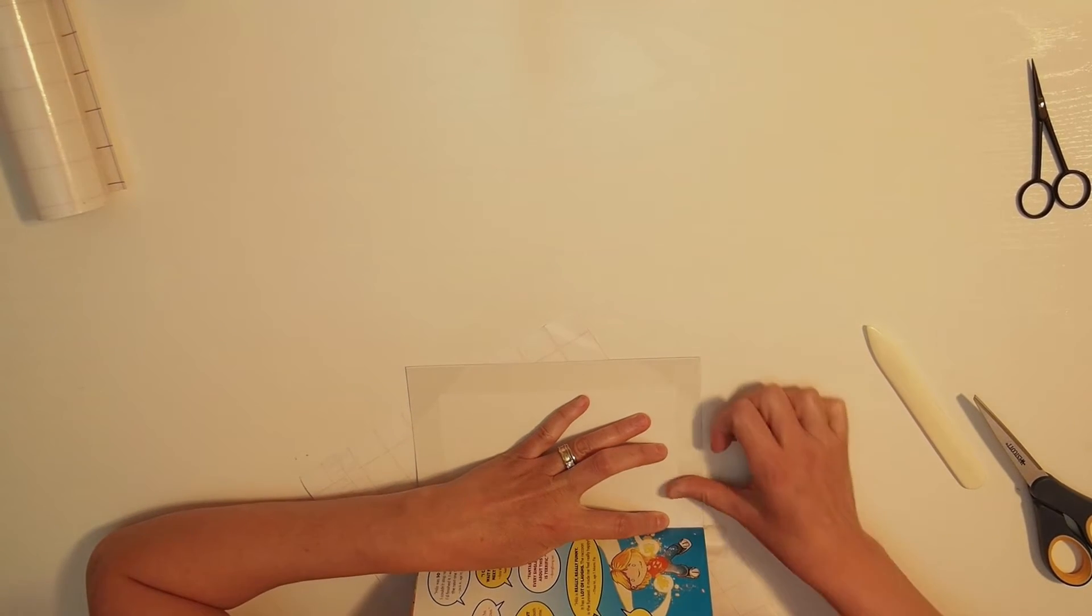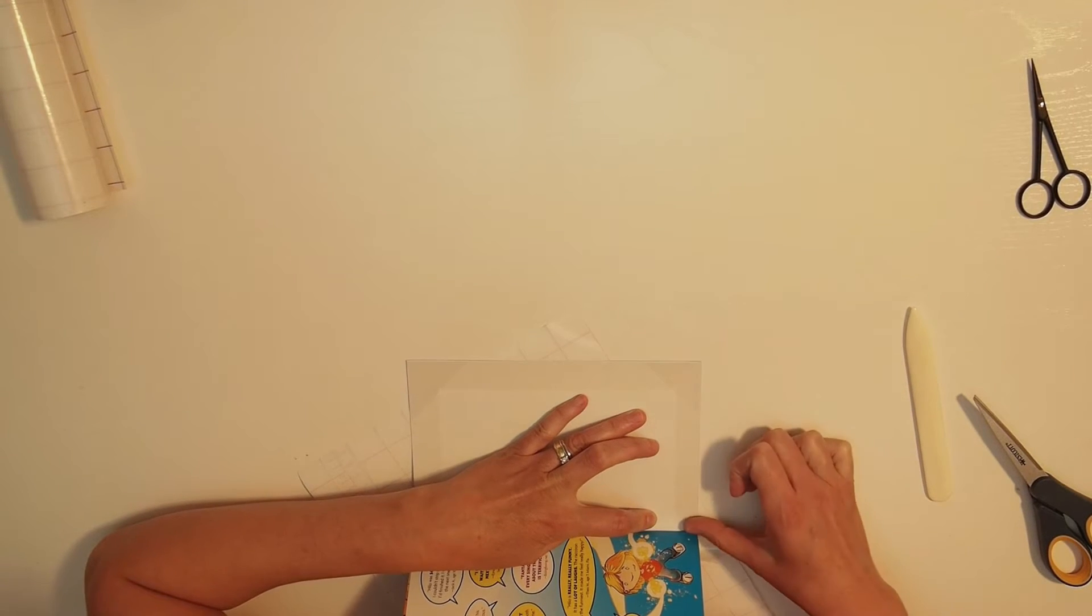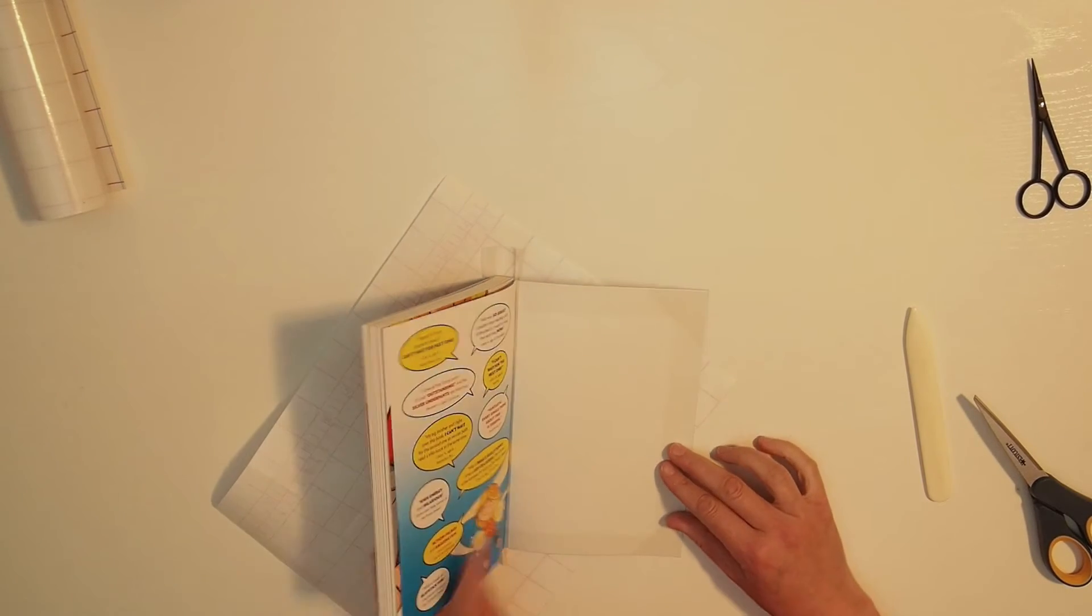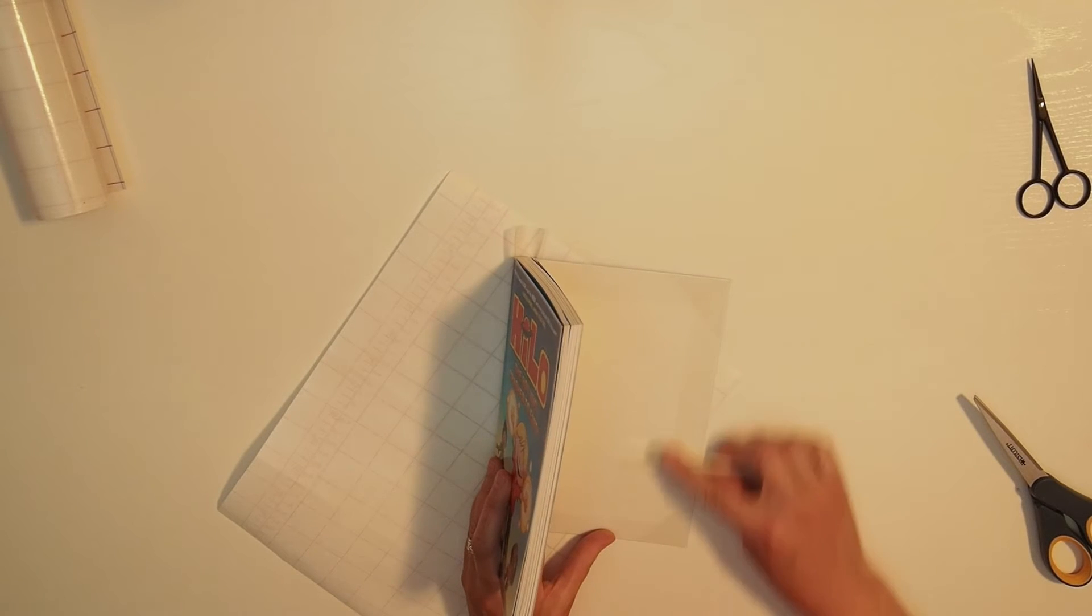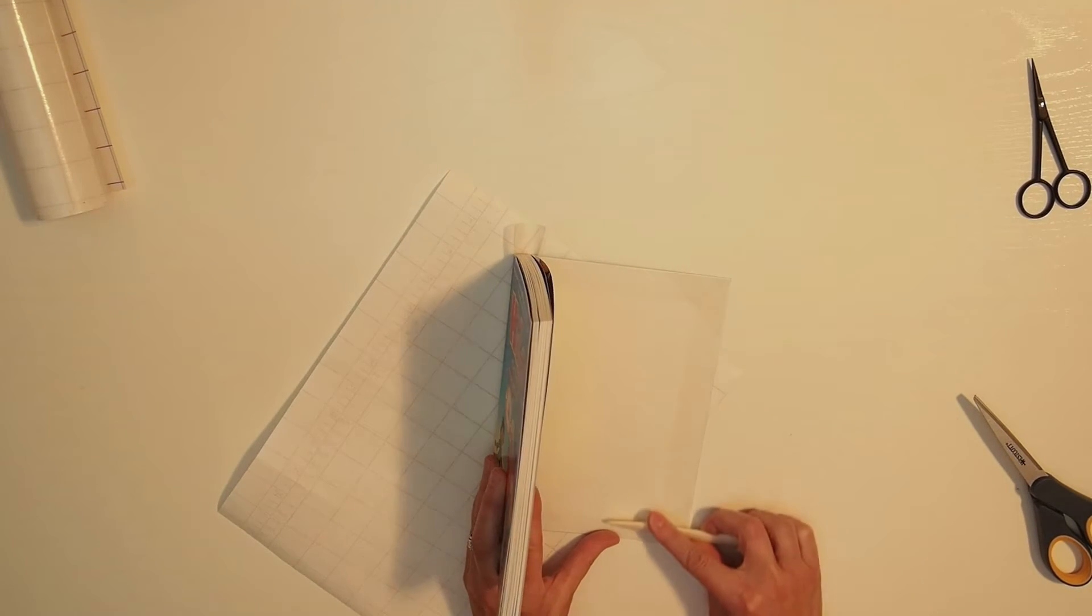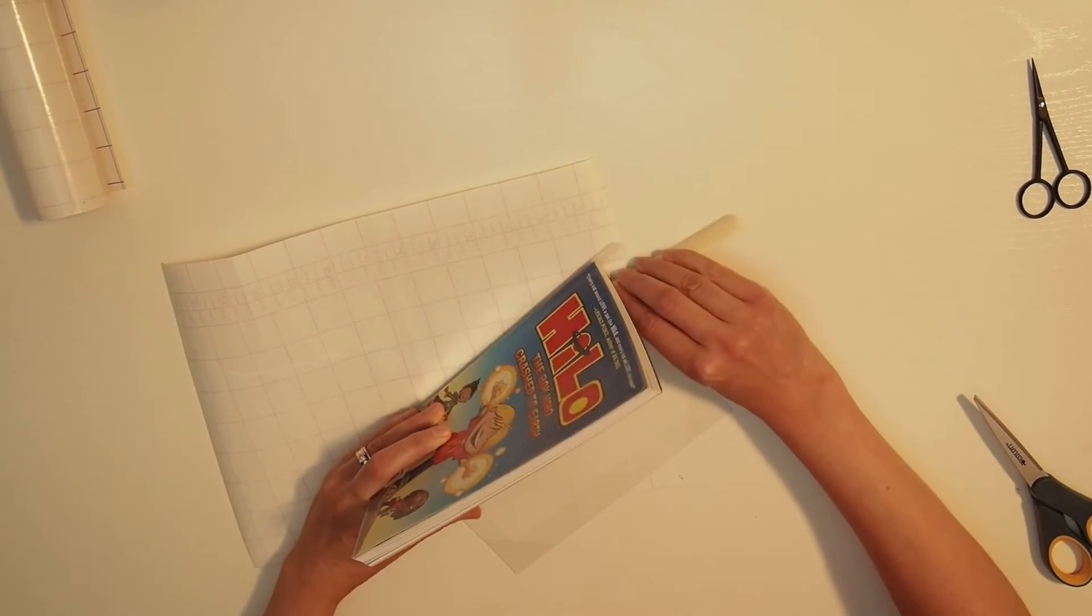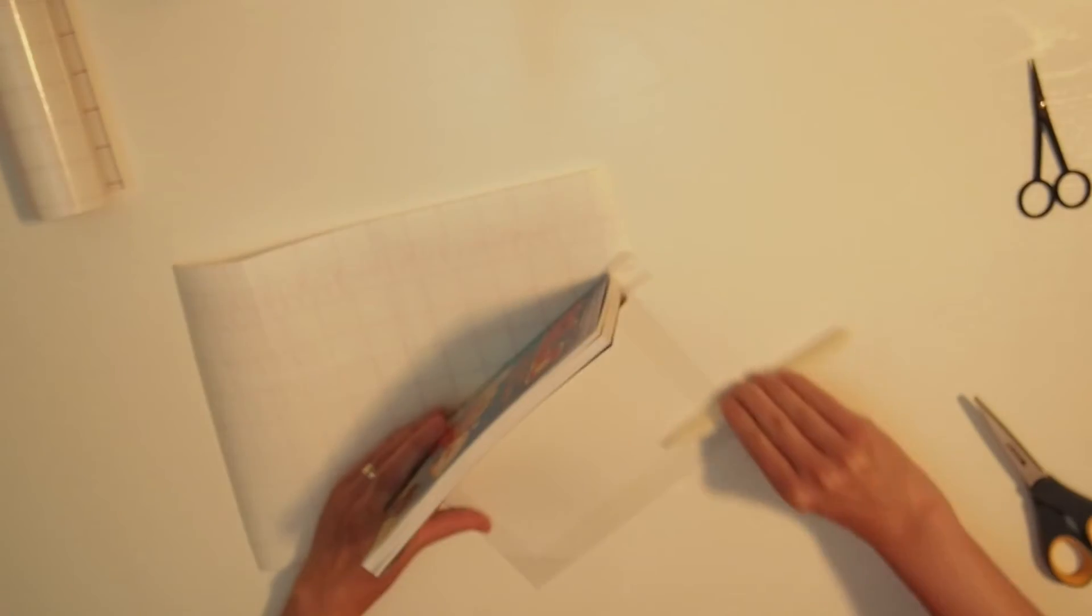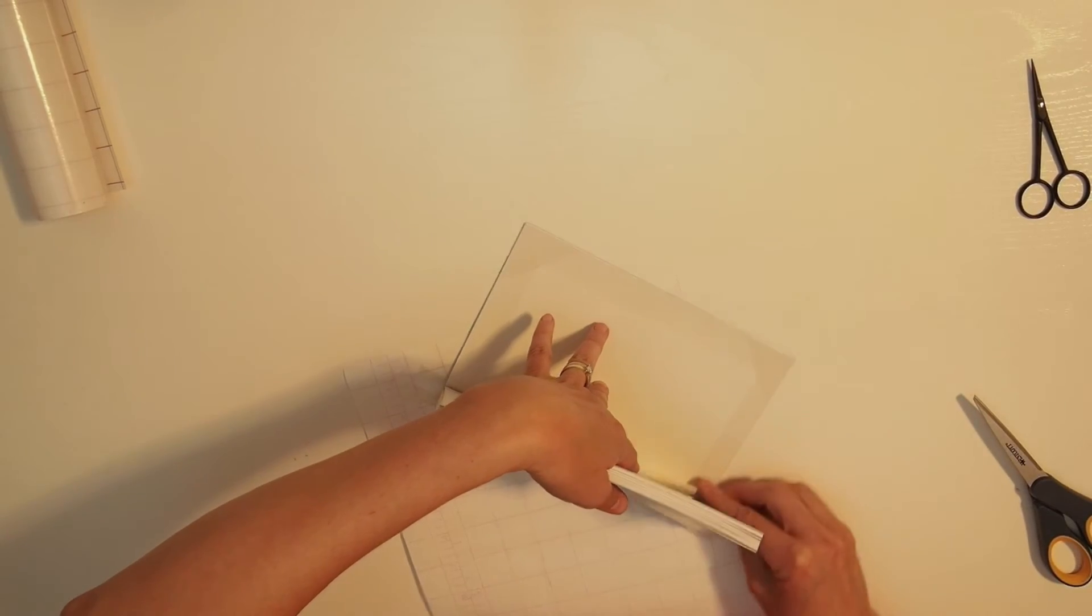Lay the cover flat on the table. I like to do this with my fingers first and then the bone folder, because if you have any puckers or gaps or anything in this and you use the bone folder, you will crease them and pretty much almost make them permanent. So get the laminate to lay down first, and then use the bone folder to really press it in.